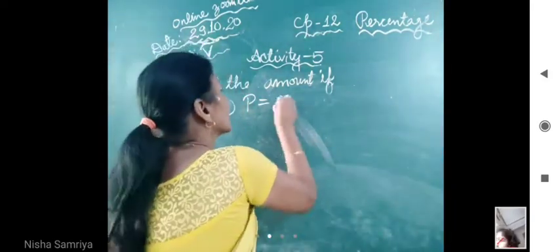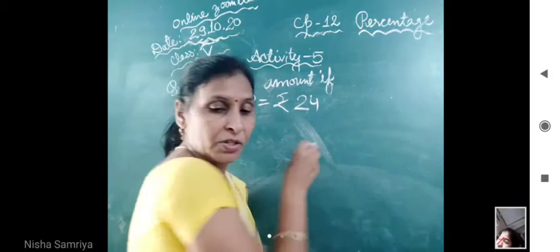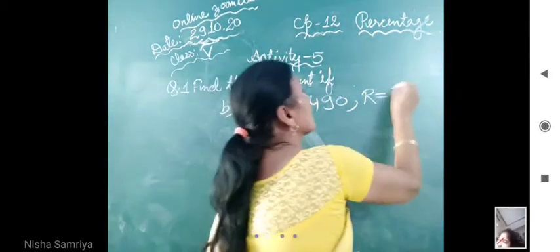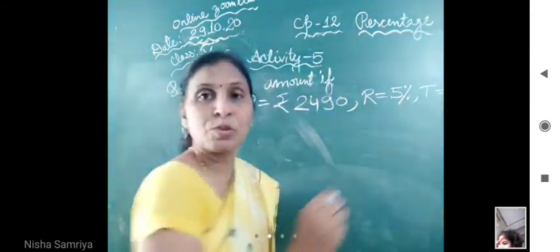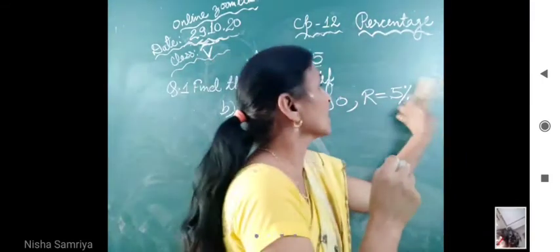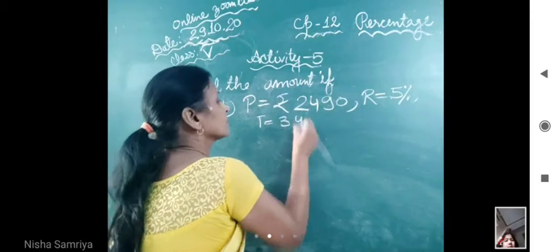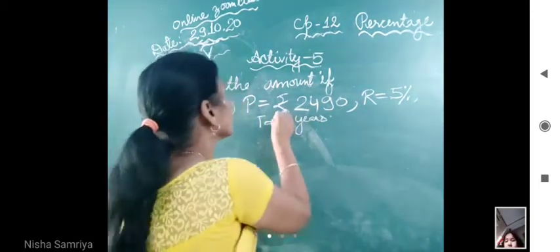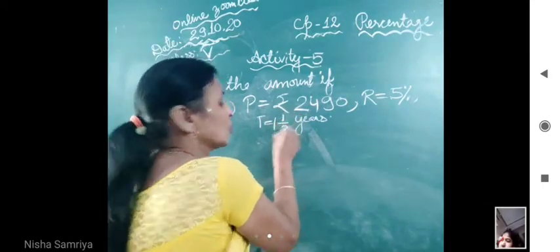That is P is equals to rupees 2490, and rate is equals to 5% per annum, and time is equals to 3 years. Time kitna diya hai? That is 3 years. Sorry, time is 1 complete, 1 upon 3 years. Clear?